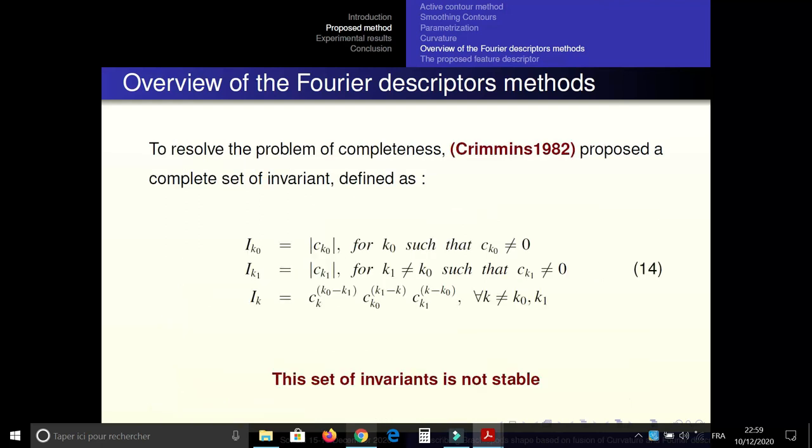To overcome the problem of completeness, Granlund proposed a complete set of invariants defined as follows. But the set of invariants proposed by Granlund is not stable because a slight modification on the set of invariants applied a remarkable distortion on the shape.